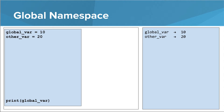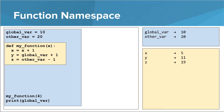Now let's introduce a function. This function has its own namespace. The my_function function has three names in it: x, y, and z. If we were to call my_function(4), we would get the following values in the function's namespace. x is going to be set to x plus one — since x is the parameter passed in, which is four, we now have x mapped to the value of five.